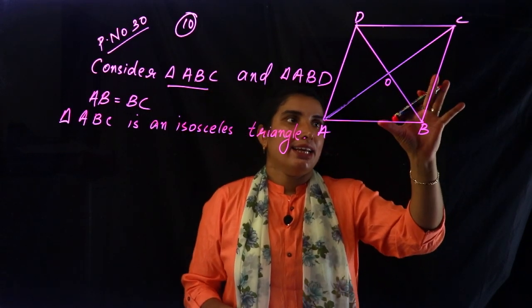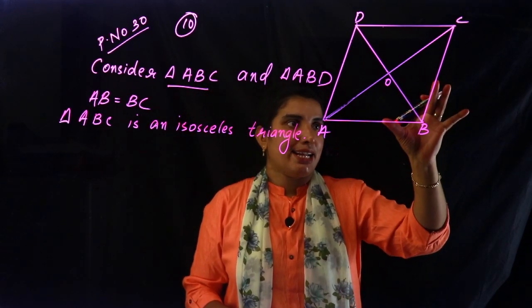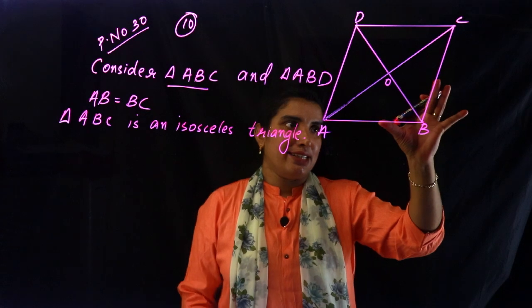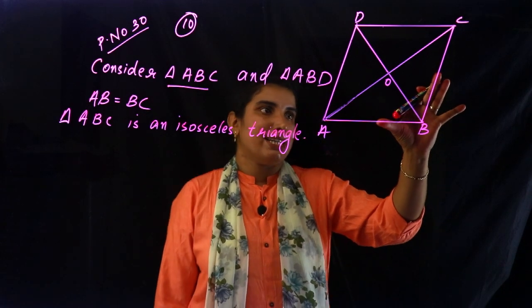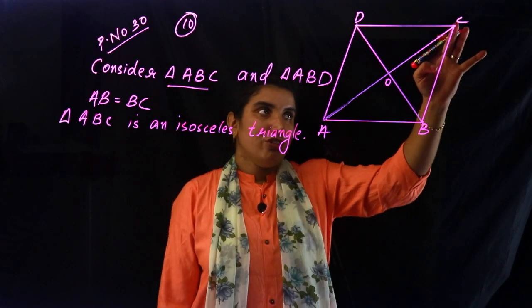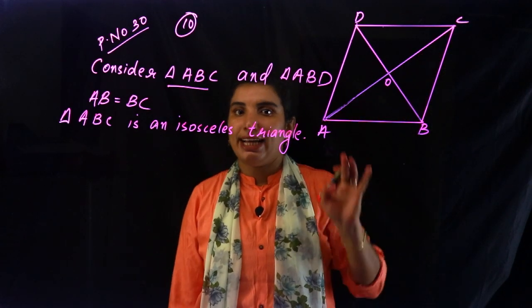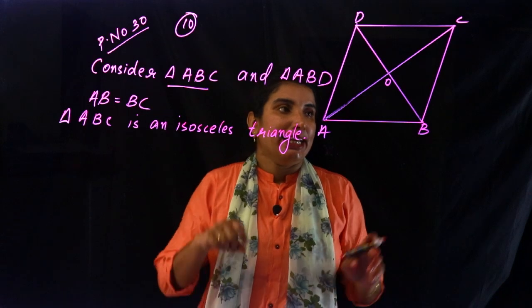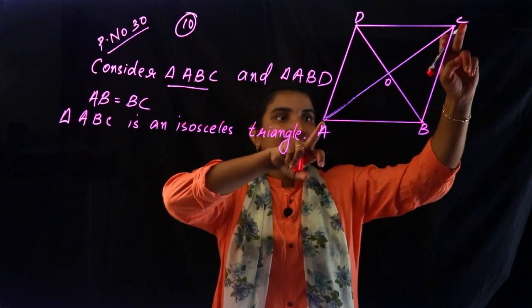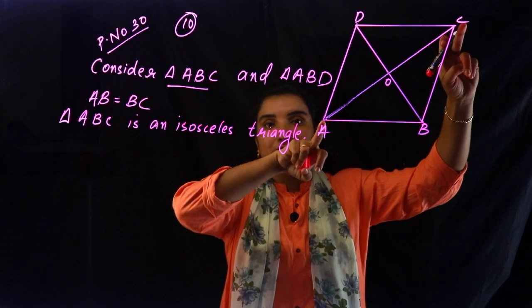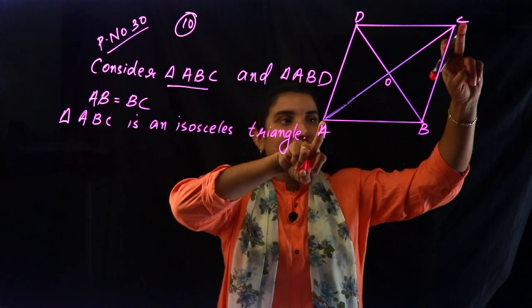These two equal sides form a line. CA is a diagonal. The equal sides define this line.